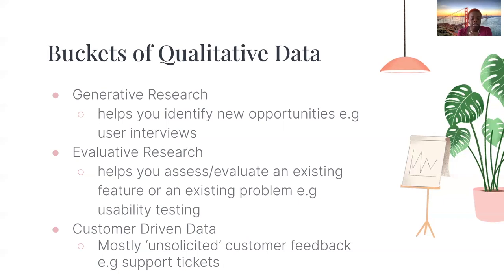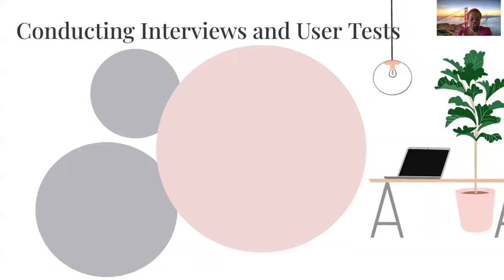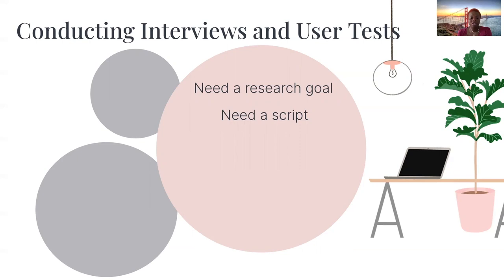I want to talk about two of the most common research methods you can use as a product manager: user interviews and user tests. Both are helpful for both generative and evaluative research. First, you need a research goal — you don't want to go in unclear about what you're trying to identify. You always want to have clear research goals and clear research questions. Second, you need a script. Preparation is really key with these methods. You want a clear script of what you want to ask users, potential follow-up questions, and that script should tie into your research goal.